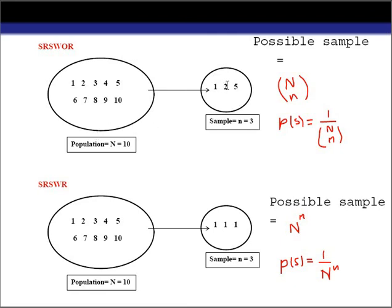Since unit 2 is already selected at the second draw, it is not going to be considered in the population at the third draw. As a result, there are only 8 units in the population, and each of the 8 units has the same probability — 1/8 — of being selected into the sample. Since we need a sample of size 3, our goal is complete and we stop here.